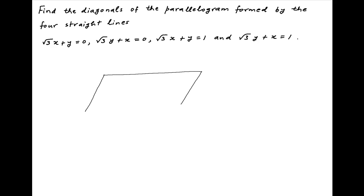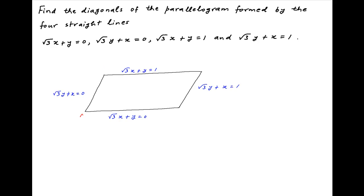We are given a parallelogram formed by the four straight lines: √3x + y = 0, √3y + x = 0, √3x + y = 1, and √3y + x = 1. Let's denote the four vertices by A, B, C, and D respectively.